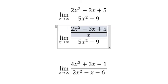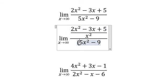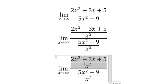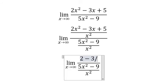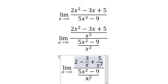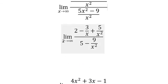numerator and denominator. So we simplify and you get 2 minus 3 over x plus 5 over x squared. Similarly for this one you get 5 minus 9 over x squared. We know that when x